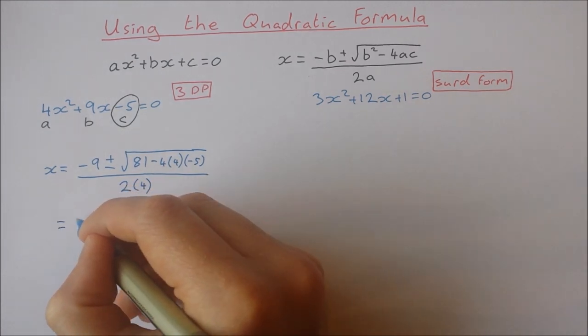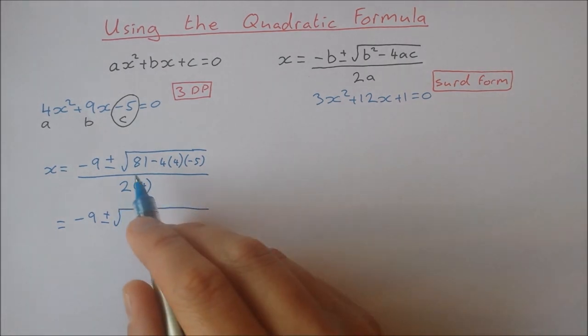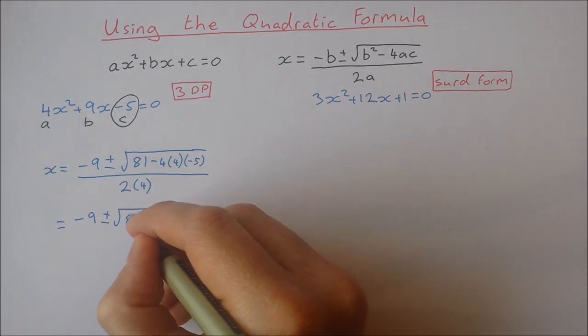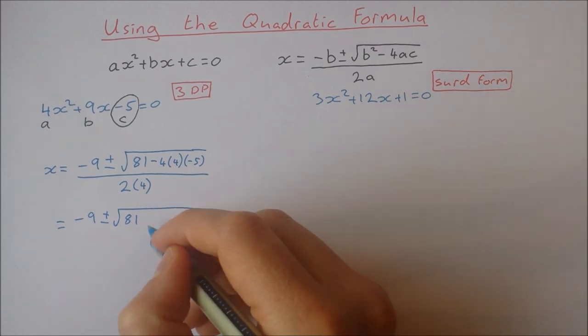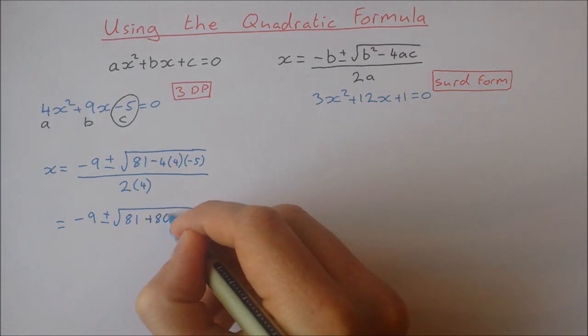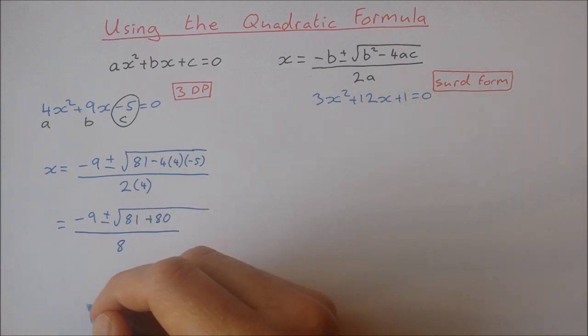Okay so this is equal to minus 9, plus and minus the square root of 81, minus 4 times 4 times minus 5 is 80, and 2 times 4 is 8. So I have minus 9 plus and minus the square root of 161 over 8.